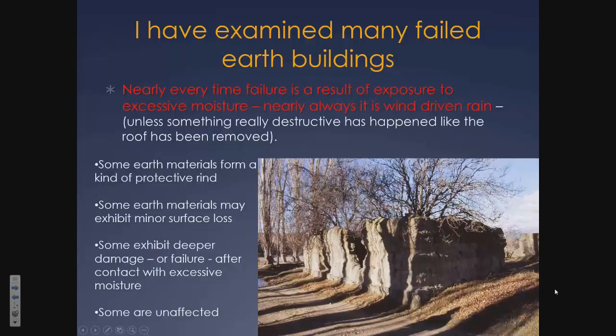Some old rammed earth buildings lose their roof — a lot of historic earth buildings in New Zealand lost their roofs in the Second World War because steel was needed. As we've talked about today, some buildings form a kind of protective rind. Some earth materials get minor surface loss, some exhibit much deeper damage or failure after excessive moisture, and some materials are completely unaffected.